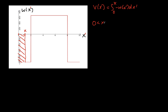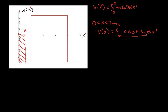For x between 0 and 2 meters, v(x) is the integral from 0 to x of minus w(x') dx'. Since w(x') is minus 1,000 newtons per meter in this region, minus w is 1,000 newtons per meter. That's a constant, so integrating gives 1,000 newtons per meter times x. So for x between 0 and 2 meters, v(x) equals 1,000 newtons per meter times x.